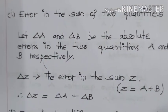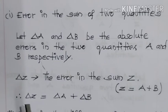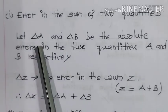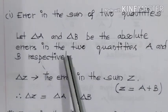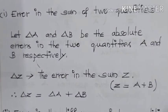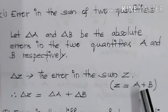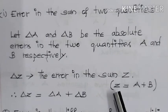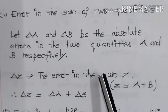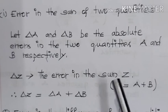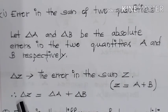The first one is error in the sum of two quantities. Let delta A and delta B be the absolute errors in the two quantities A and B respectively. Here A and B are added so we get Z. Delta Z is the error in the sum of A plus B, that is Z. The expression is: delta Z is equal to delta A plus delta B.